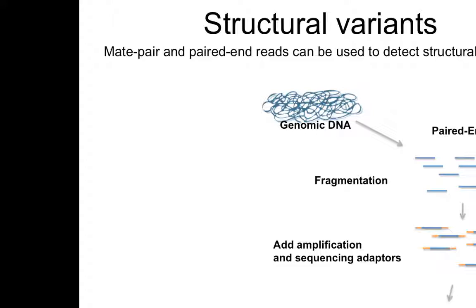There are two different ways of doing paired-end sequencing. The method I described this morning — which we refer to as paired-end sequencing — involves taking fragments of DNA that are fairly short, about 200 to 500 bases. We add sequencing adapters to each end of the DNA fragment and then sequence inwards from the ends, getting one read mapped to the forward strand and one read mapped to the reverse strand.